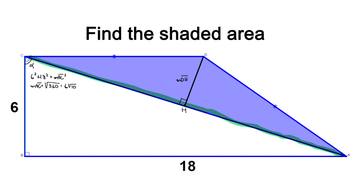To show similarity, I'll call this angle alpha and this angle beta. Since triangle ABC is a right angle triangle, we can conclude that alpha plus beta equals 90 degrees. Since we have a right angle trapezoid, this corner is 90 degrees, so angle HCD would be beta. Since alpha plus beta equals 90 degrees and we have a right angle here, angle CDH would be alpha. We have now concluded that triangles ABC and CHD are similar triangles, so we can set up an equivalent fraction to find the length of segment DH.